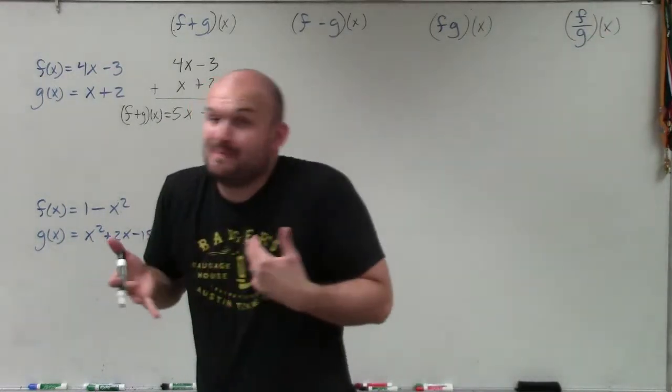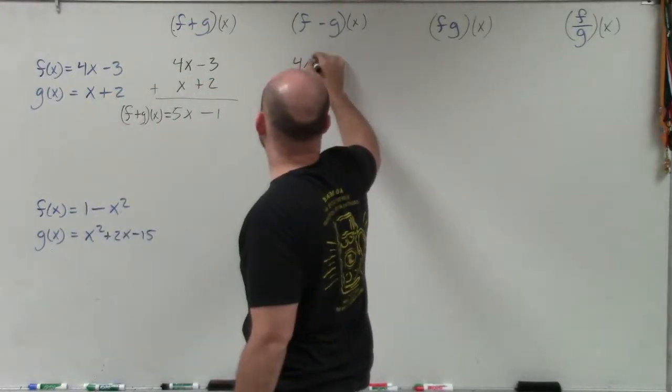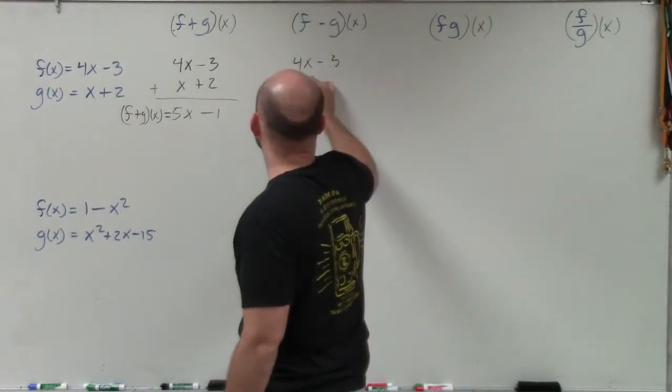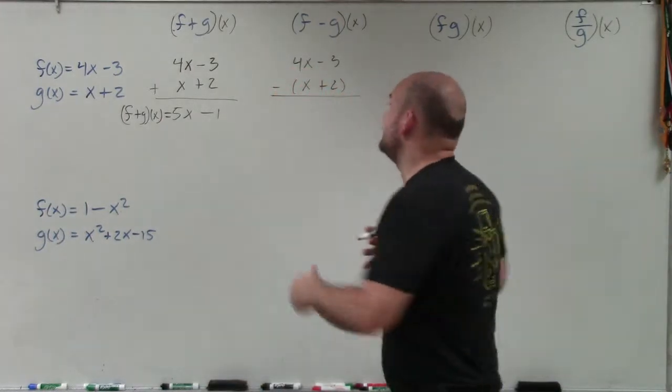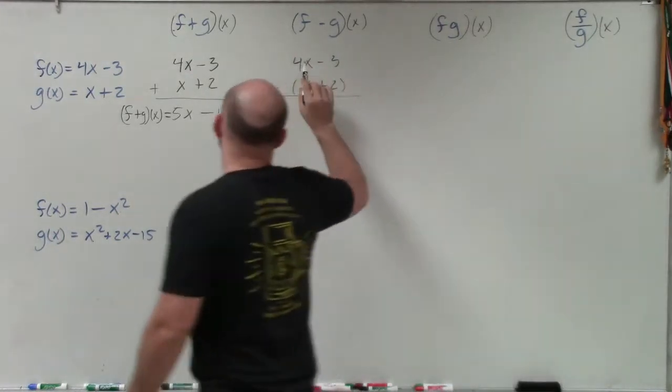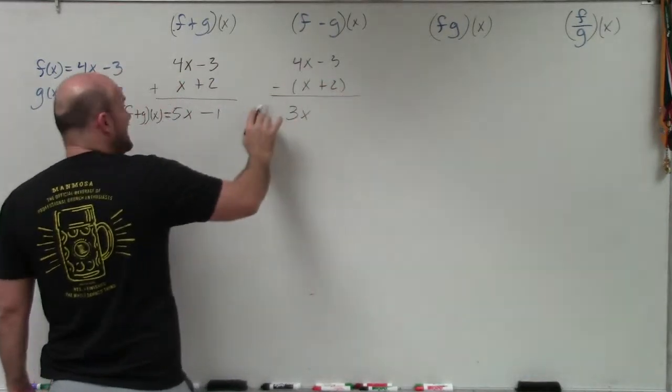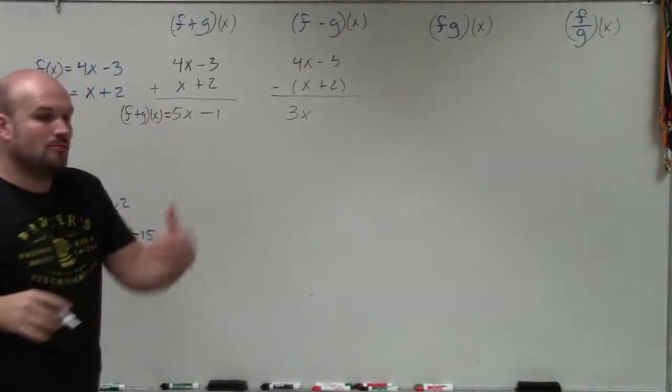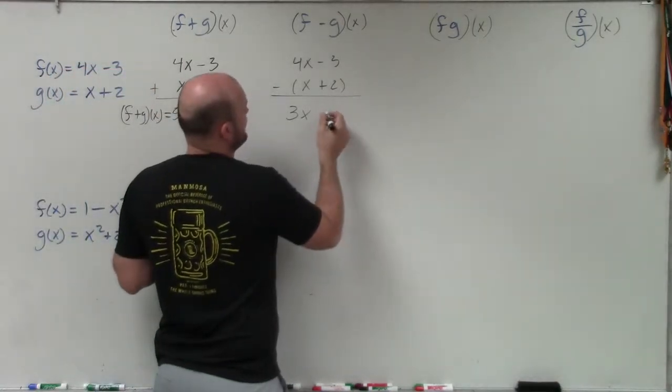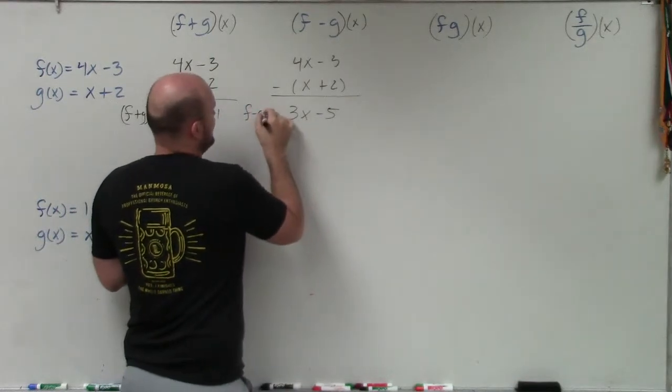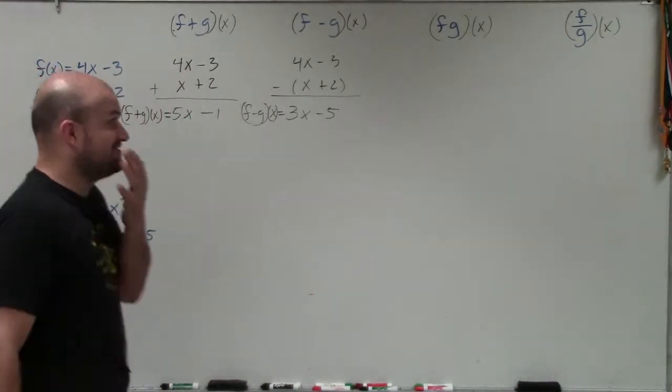So if I was going to do subtraction, I'm going to basically do the exact same thing. This is saying f minus g. So therefore, it's going to be 4x minus 3 minus x plus 2. Now, I'm using parentheses in this case just to remind me that I need to subtract each of these terms. So it's 4x minus x, which is going to be 3x, and then negative 3 minus 2. So if you owe me $3 and you borrow two more dollars, that is going to be negative 5. So f minus g of x is equal to 3x minus 5.